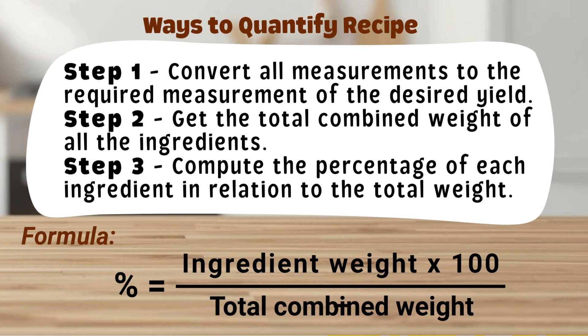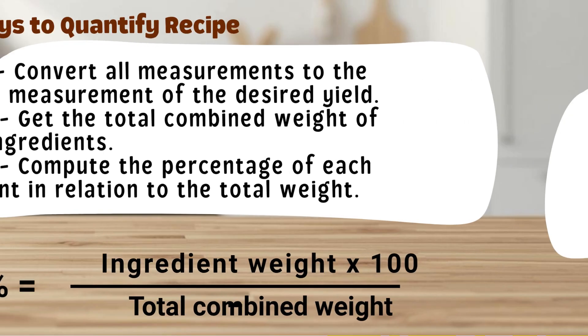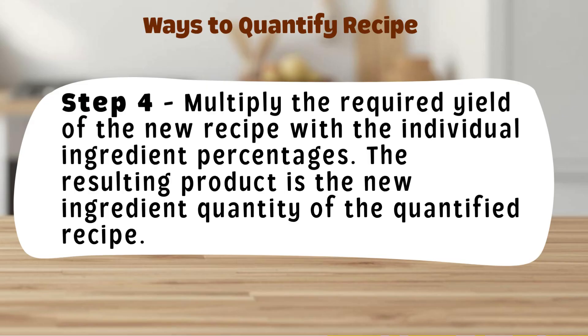Step 1: Convert all measurements to the required measurement of the desired yield. Step 2: Get the total combined weight of all the ingredients. Step 3: Compute the percentage of each ingredient in relation to the total weight. Formula: Percent = (ingredient weight × 100) ÷ total combined weight. Step 4: Multiply the required yield of the new recipe with the individual ingredient percentages. The resulting product is the new ingredient quantity of the quantified recipe.